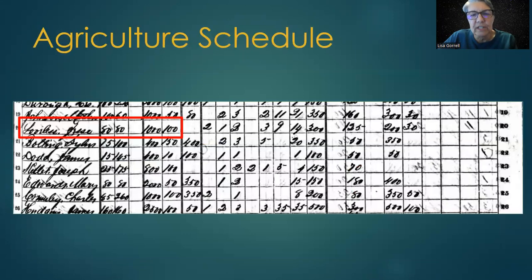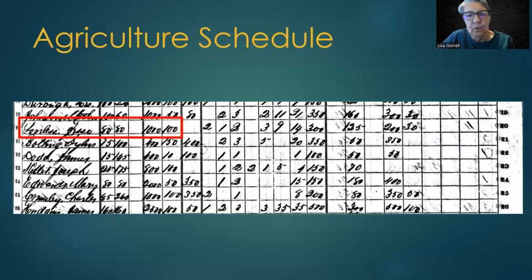For the years 1850 through 1880, if your ancestor was a farmer, he may have appeared in an agricultural schedule. Here, if he owned the land, it would show the number of acres and the value of the land.